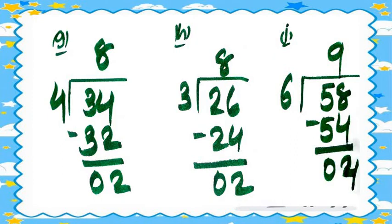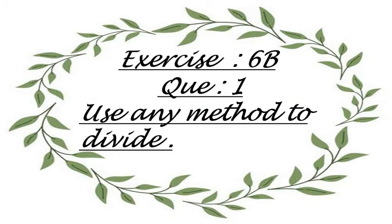Question 3i: 58 divided by 6. In the table of 6, 58 will not come directly. We take the nearest lower value: six nines are 54. So 58 minus 54 equals 4. The quotient is 9 and the remainder is 4. I hope you all understood.